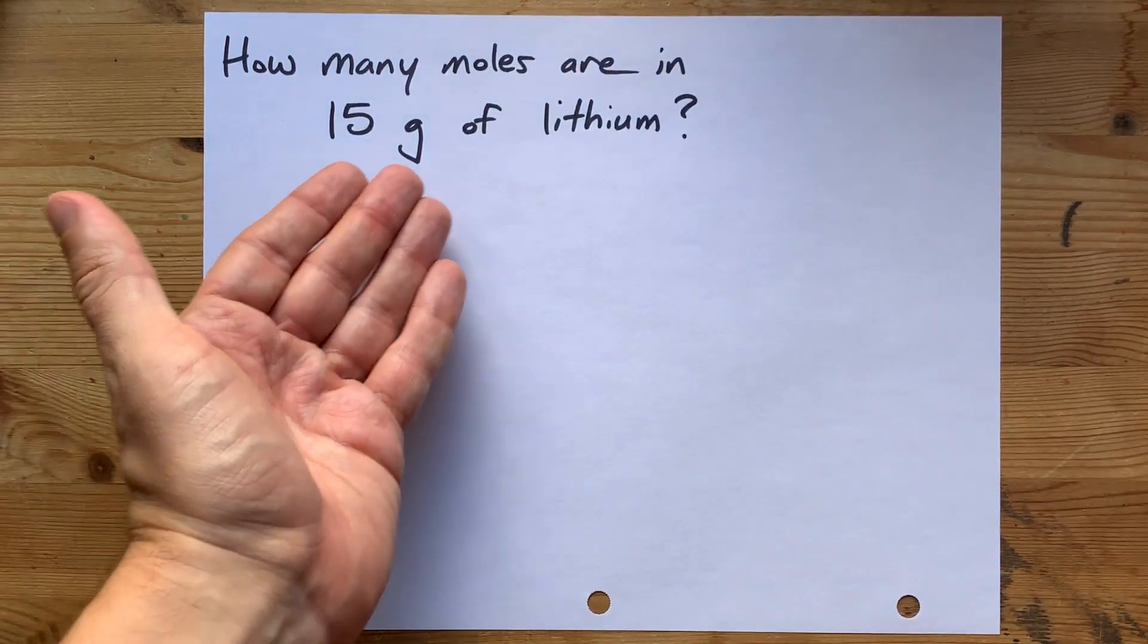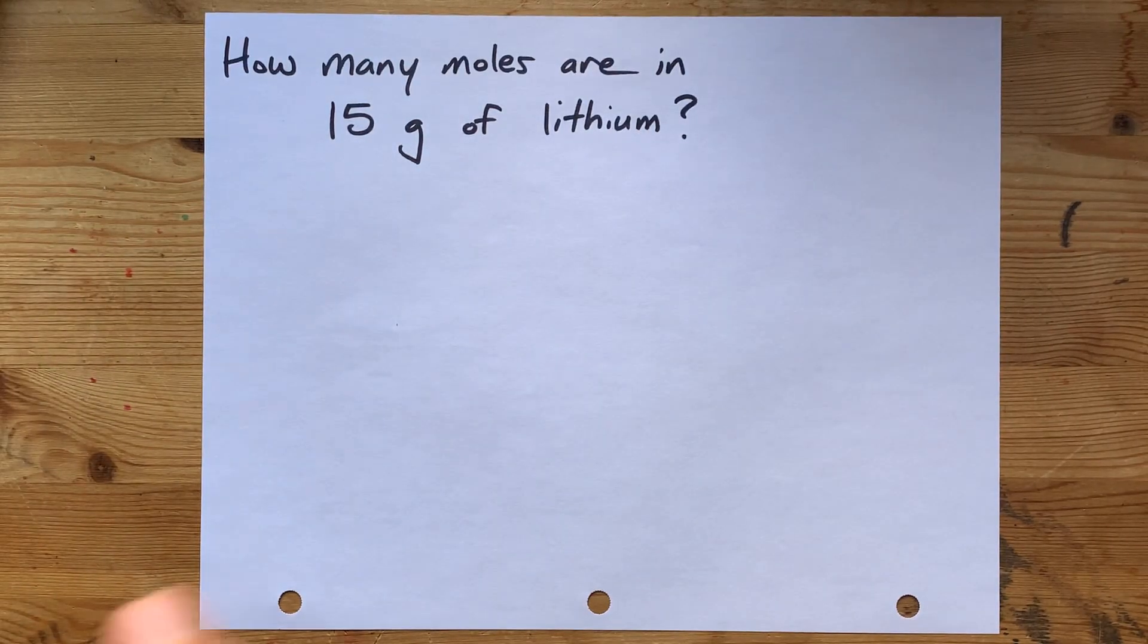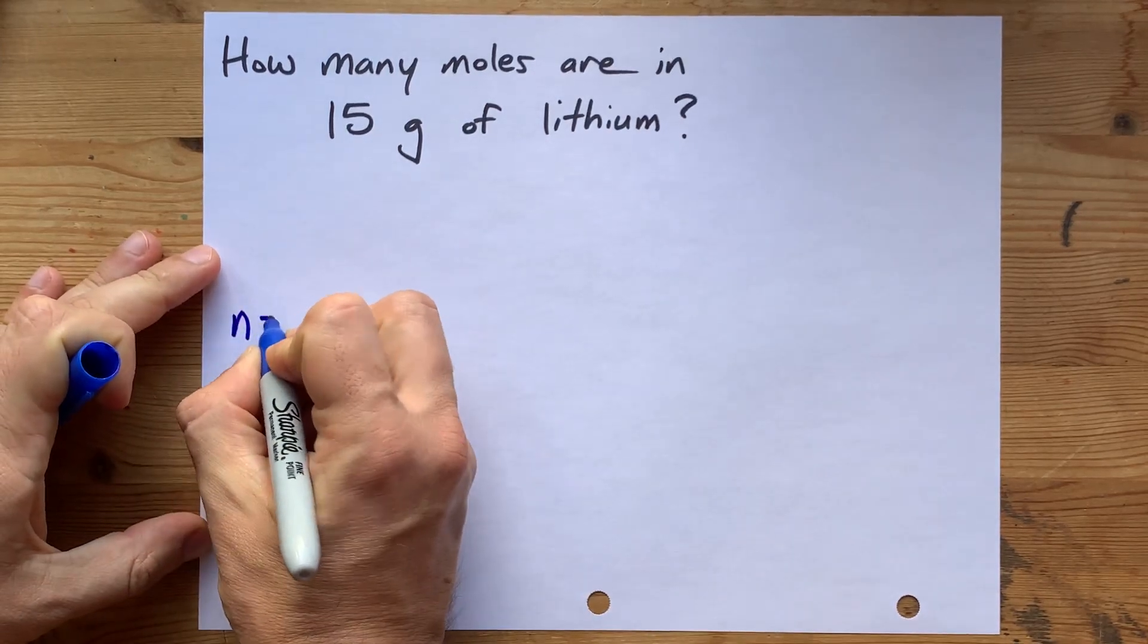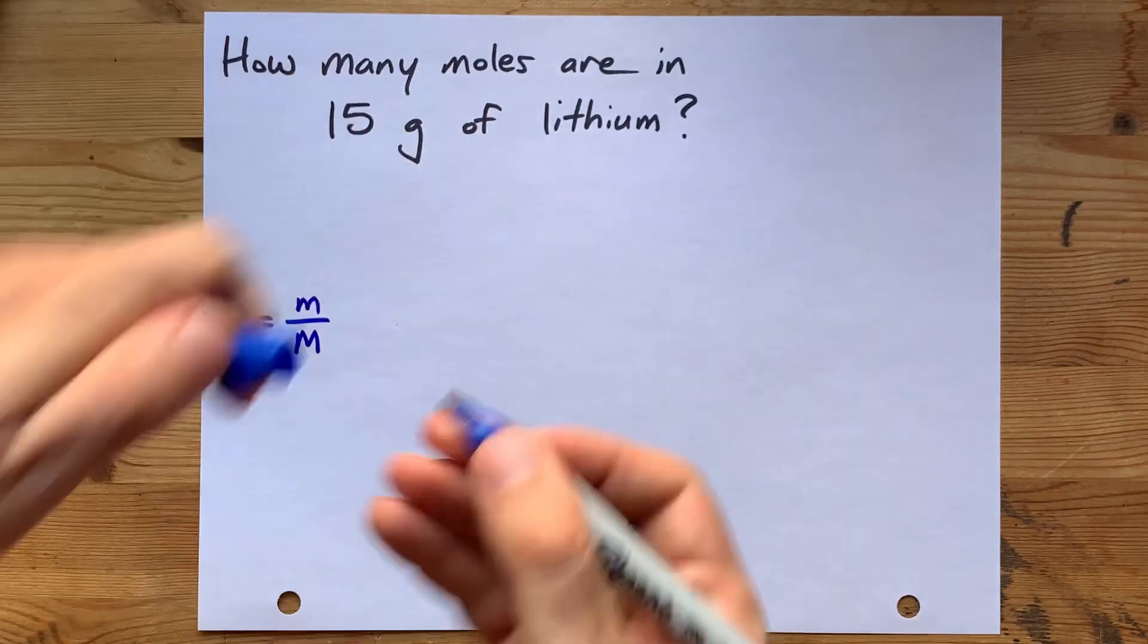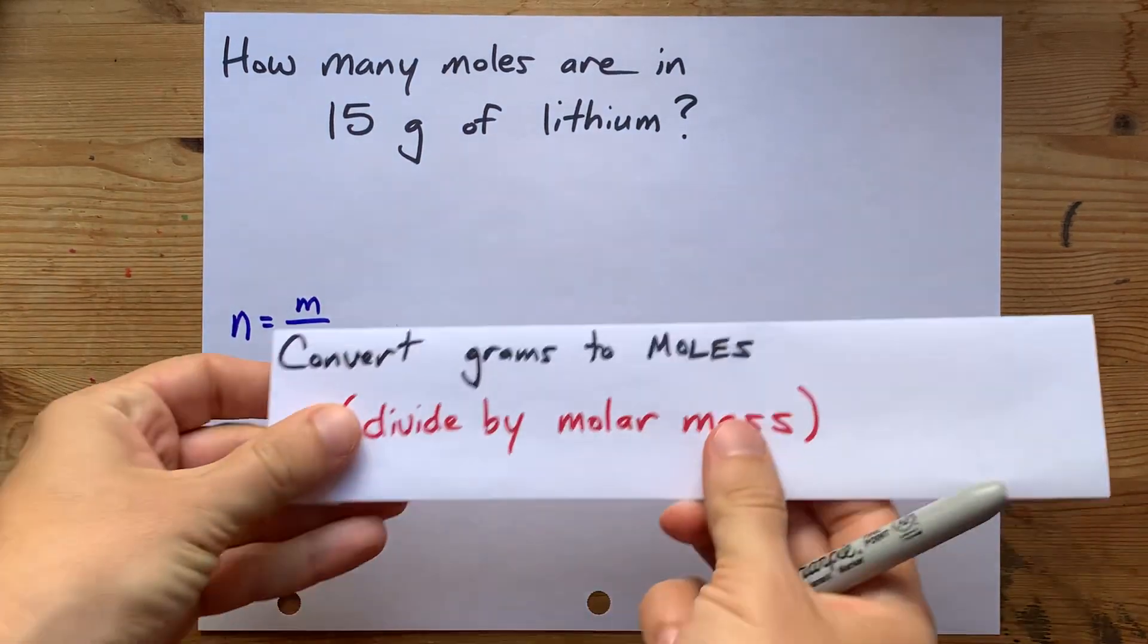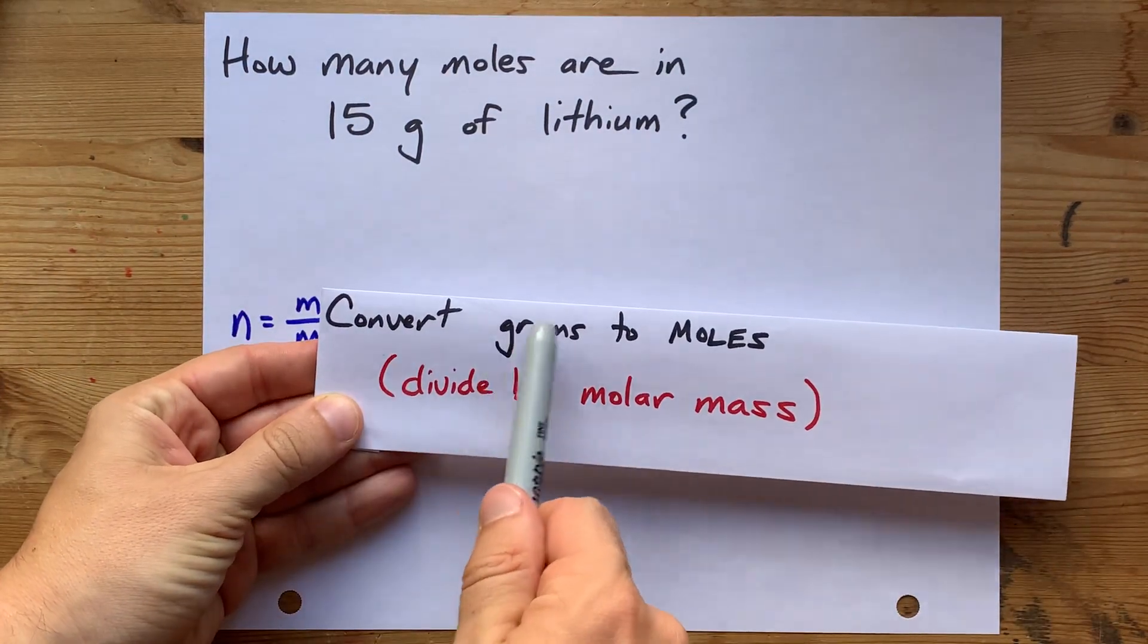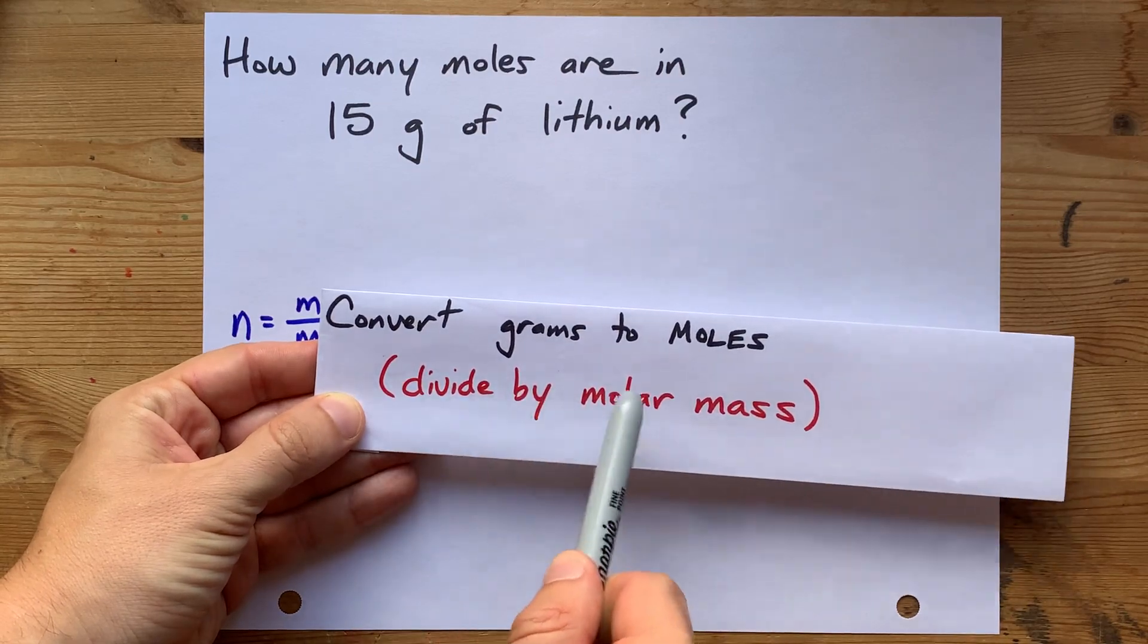How many moles are there in 15 grams of lithium? Well, you can calculate a number of moles from a mass by dividing by the molar mass of the particles themselves. You might remember this from another video of mine. You convert grams to moles by dividing by molar mass.